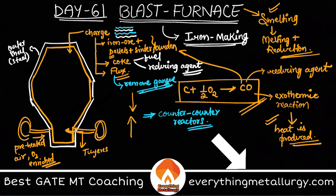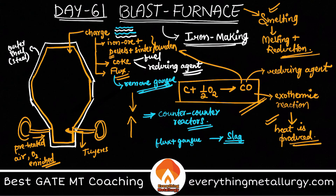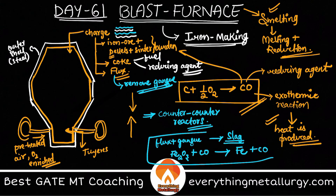As the charge goes down, liquid is generated. Flux reacts with the gangue to generate slag. The ore — usually hematite — is reduced to give Fe. We have various other intermediate reactions also, but the main overall transformation is the reduction of hematite to iron.